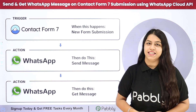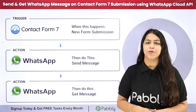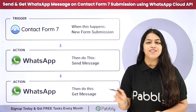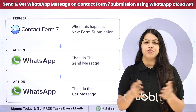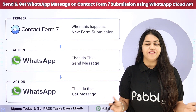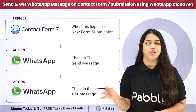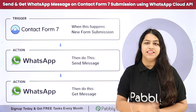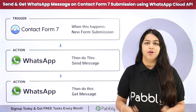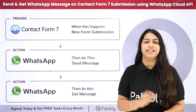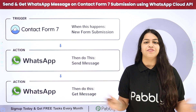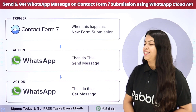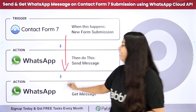I'm running a business and we gather the details of our potential clients with the help of Contact Form 7. What I want is that as soon as we receive the details of our potential clients, automatically an automated WhatsApp message should be sent to that potential client. Not only this, I should also get informed about the new lead received so that we can follow up quickly and efficiently. To do this, we are going to create a connection between Contact Form 7 and WhatsApp.